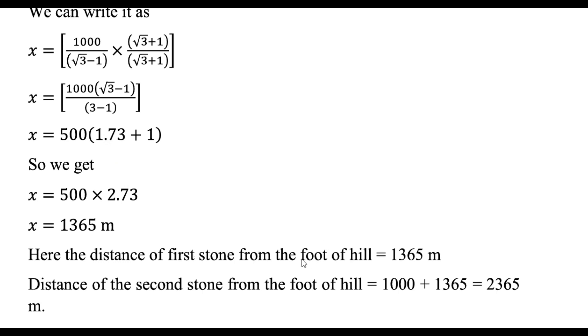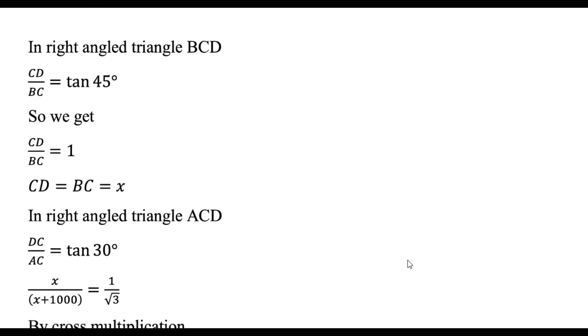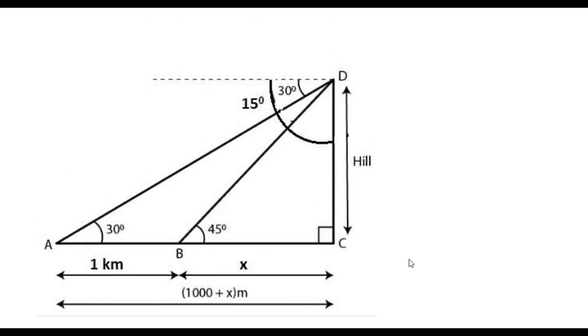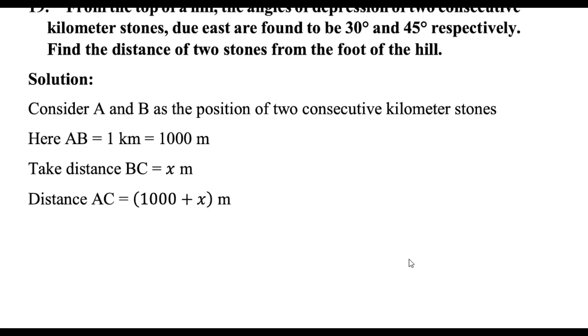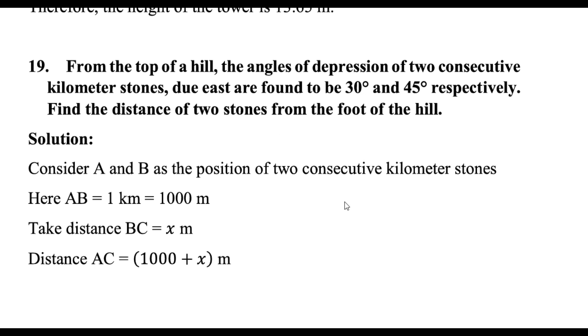So distance of the first stone from the hill is 1365 meters. And distance of the second stone from the foot of the hill should be 1000 meters added as it is a milestone. So the distance of the second stone from the hill should be 2365. The degree of correctness will depend on how fast you draw the picture as per the question. Thanks again.